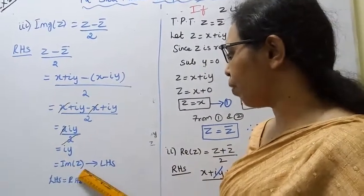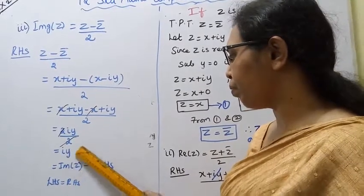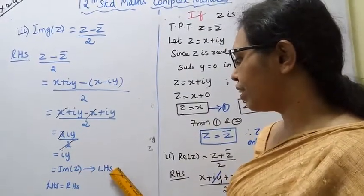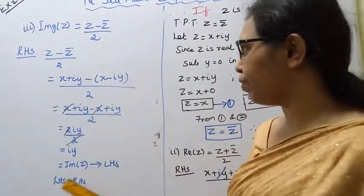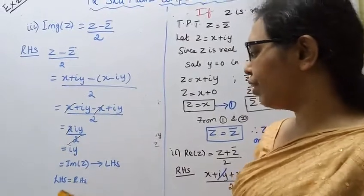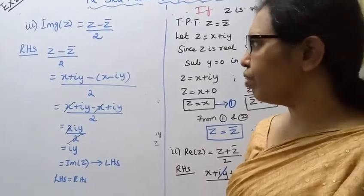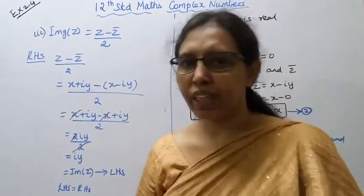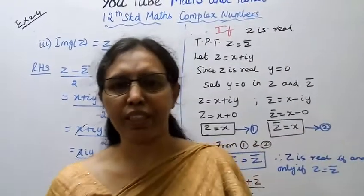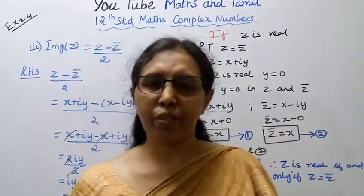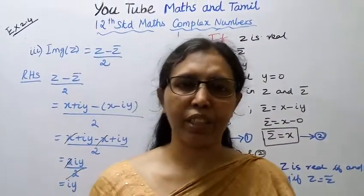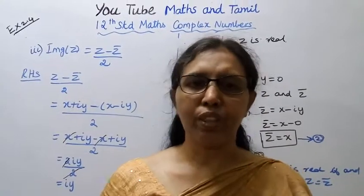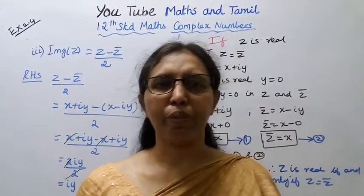The imaginary part of z equals y, so left hand side equals right hand side. That completes the proof. Students, practice this on your own. This channel helps you to get 100 marks. Subscribe to the channel and click the bell button.